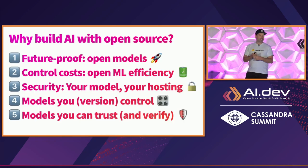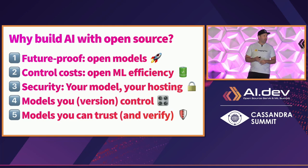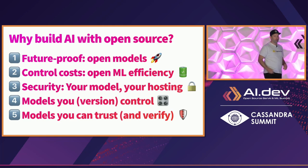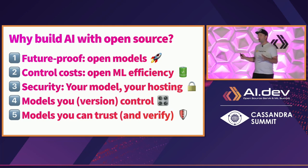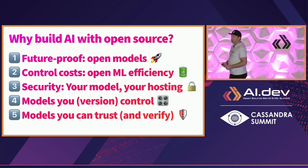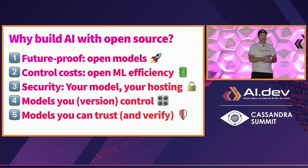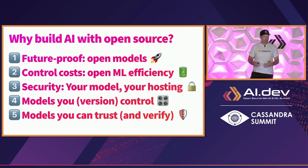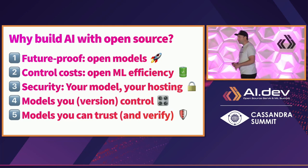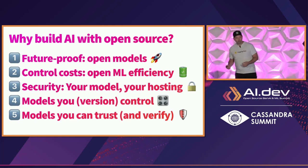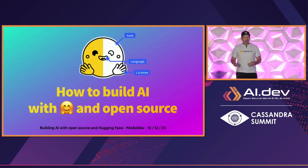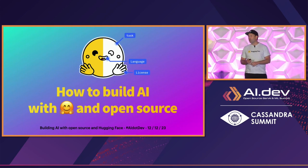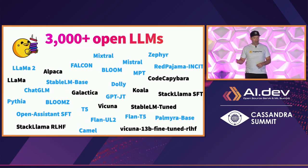So those are five reasons to build your AI applications and features with open source: it's future-proof, you're not locked into a vendor, you can control and reduce your costs, you can host your own models in your own infrastructure for security and compliance, you can control the versions of your models so they're not going to change under your feet, and you can trust and verify for the most open models. Now, how do you do that? Here are a few things you can do to build your own AI with open source and the tools provided by Hugging Face.